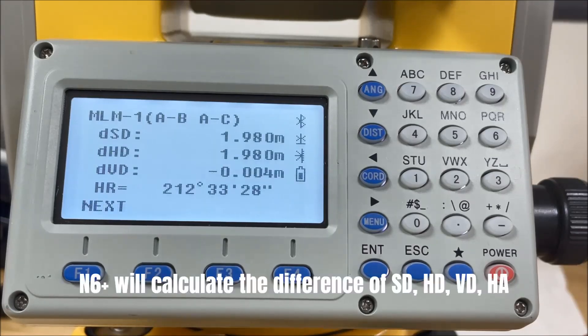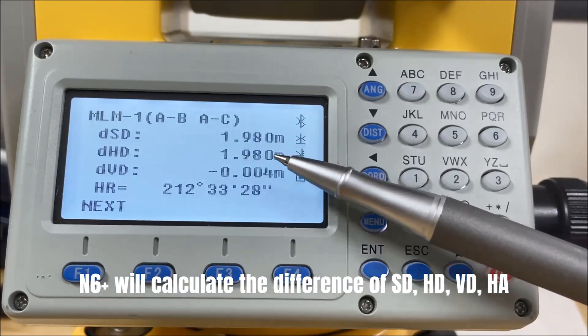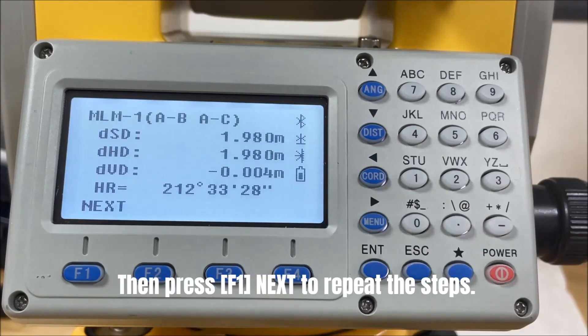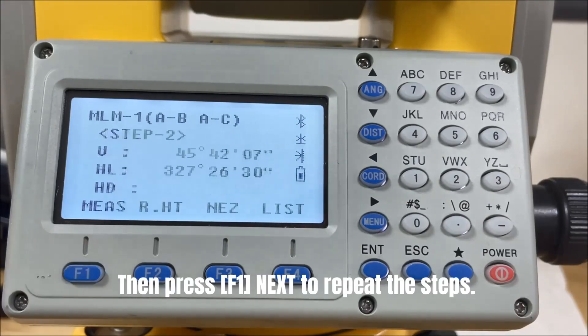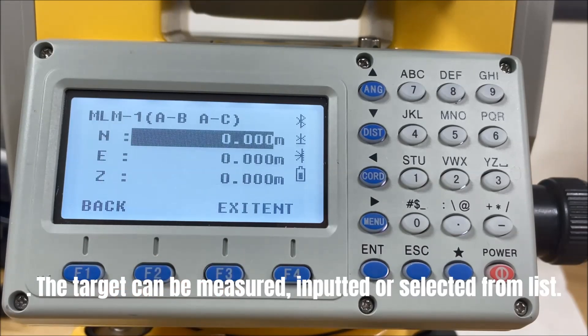N6 plus will calculate the difference of slope distance, horizontal distance, vertical distance, and angle between those two points. Then press F1 next to repeat the steps. The target can be measured, inputted, or selected from data list.